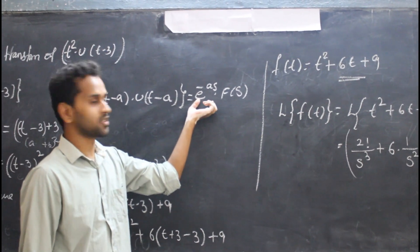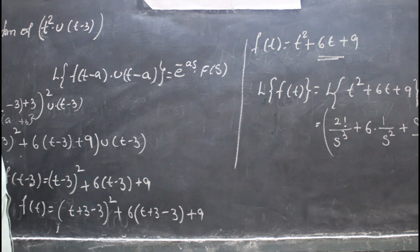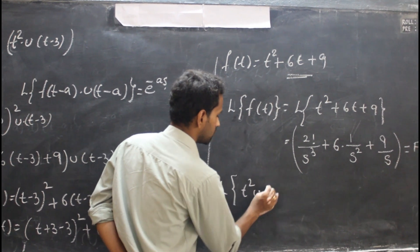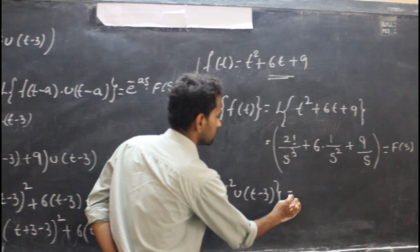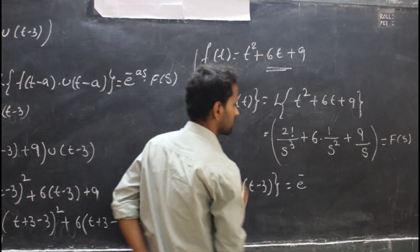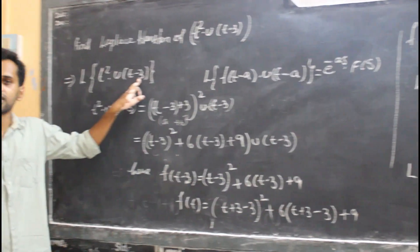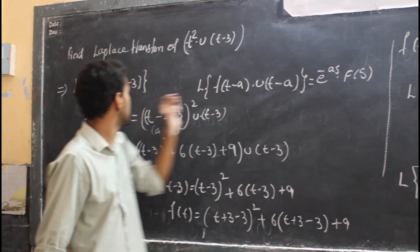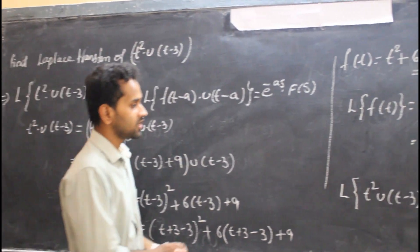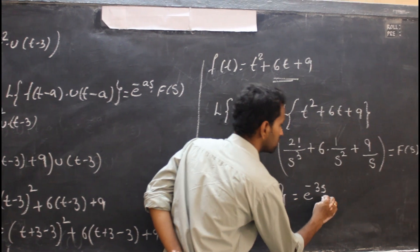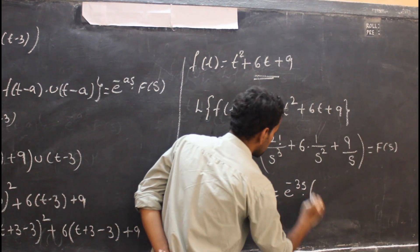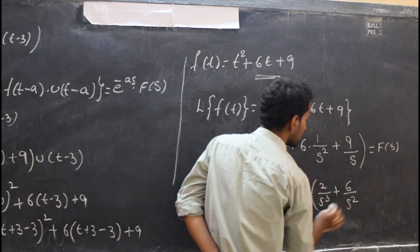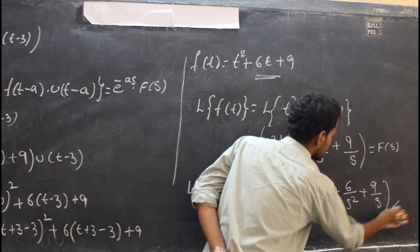With a = 3, the final answer is: L{t²·u(t − 3)} = e^(−3s)·F(s) = e^(−3s)·[2/s³ + 6/s² + 9/s]. This is the standard solution. First check if the function is in the form f(t − a)·u(t − a); if not, convert it, then apply the formula e^(−as)·F(s).